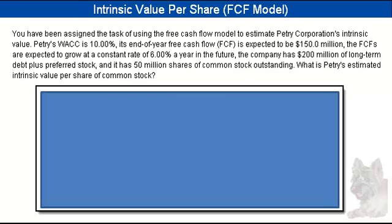You have been assigned the task of using the free cash flow model to estimate Petri Corporation's intrinsic value. Petri's weighted average cost of capital is 10%. Its end of year free cash flow is expected to be $150 million. The free cash flows are expected to grow at a constant rate of 6% a year in the future. The company has $200 million of long-term debt plus preferred stock and it has 50 million shares of common stock outstanding. What is Petri's estimated intrinsic value per share of common stock?